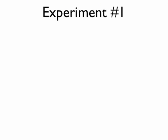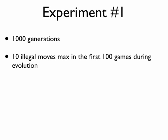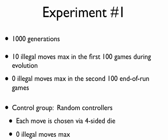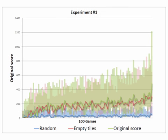In the first experiment, the controllers were evolved for a thousand generations with a maximum of 10 illegal moves in a row, after which the game would end. At the end of each run, the stakes were raised and the controllers were allowed no illegal moves, so one mistake meant game over. The evolved controllers performed significantly better than the average random controller, and the original score fitness function worked significantly better than the empty tiles fitness function.